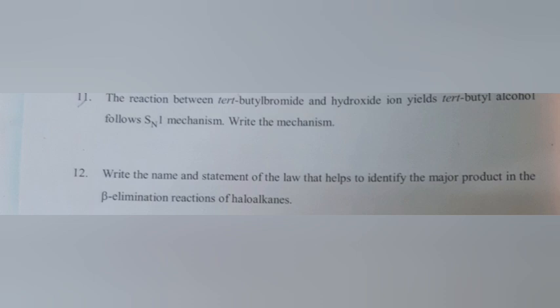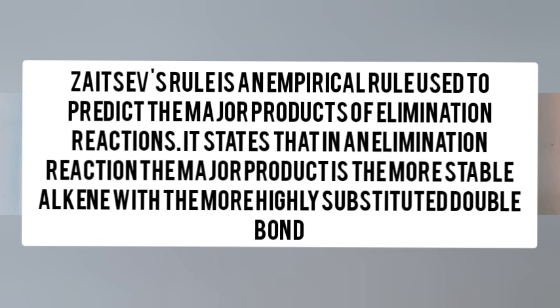Question 12: Write the name and statement of the law that helps to identify the major product in the beta-elimination reaction of haloalkanes. Answer: Saytzeff's rule. Saytzeff's rule is an empirical rule used to predict the major products of elimination reactions. It states that in an elimination reaction, the major product is the more stable alkene with the more highly substituted double bond.